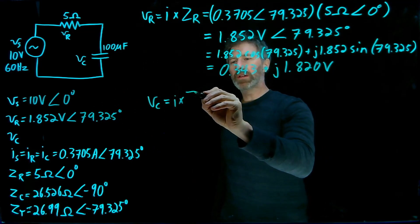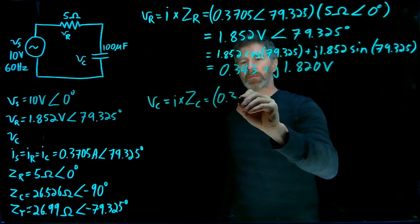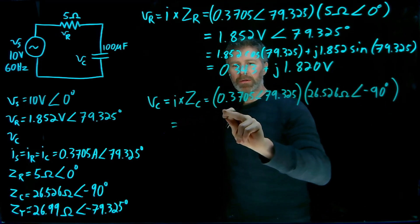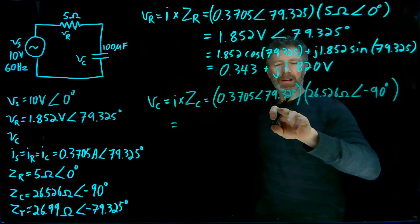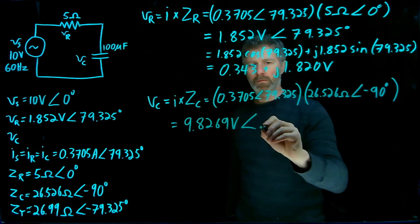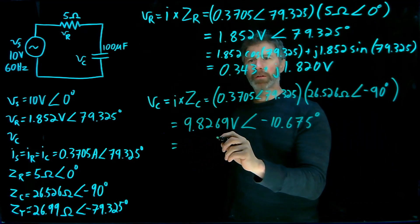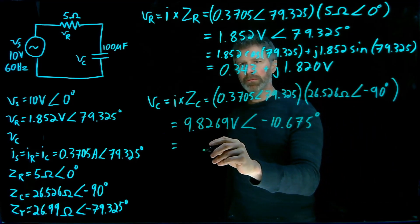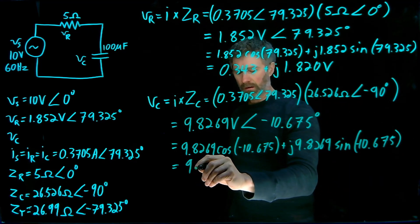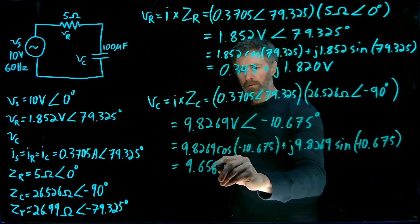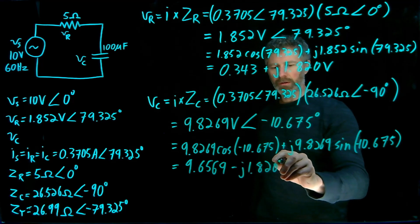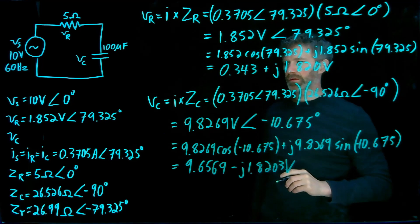Again, apply that AC equivalent of Ohm's law. When I multiply these out, I multiply the magnitudes and I add the phase angles. I can convert to rectangular notation, and that's 9.6569 minus j 1.8203 volts.